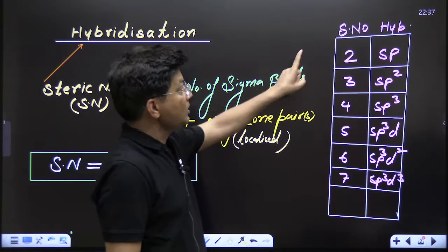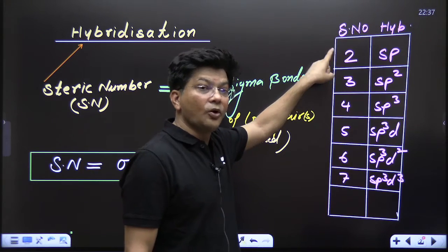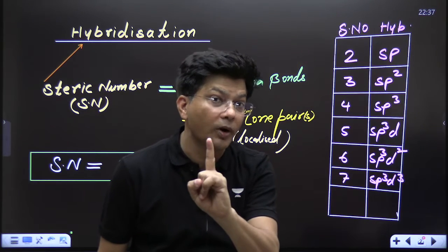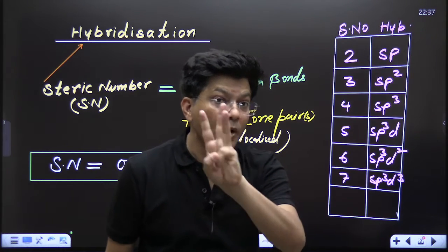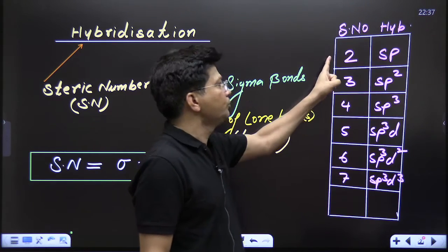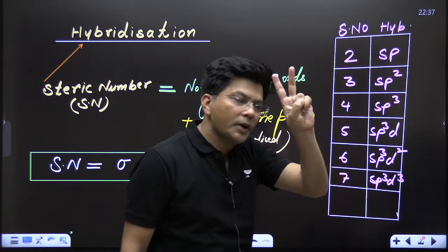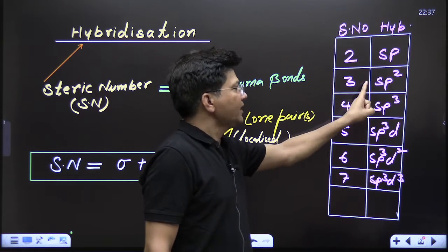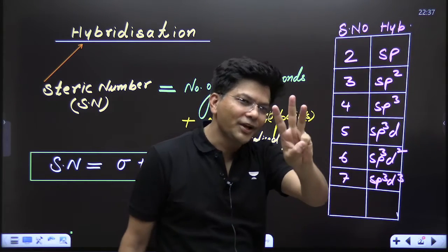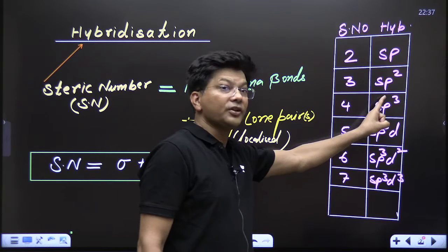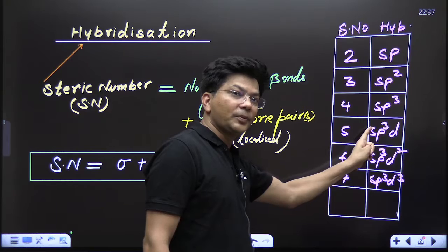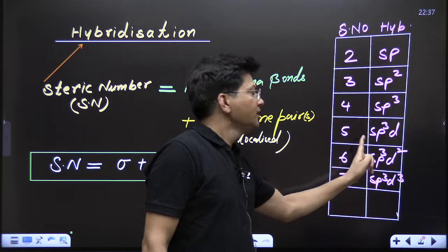When the steric number gives us the hybridization: sp means s can only be one, p can be maximum three, and d can be maximum five. So: sp² means one s and one p; sp³ means one s and two p (2+1=3); sp³ means 3+1=4; sp³d means 3+1=4 with one d, and so on.